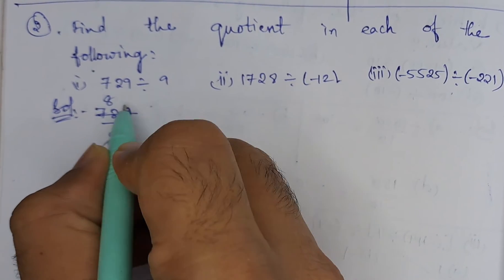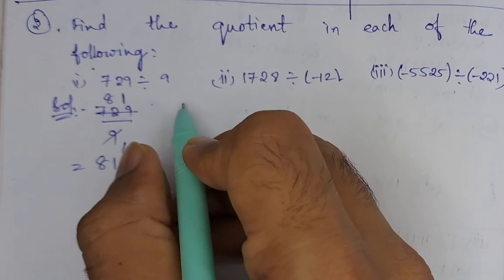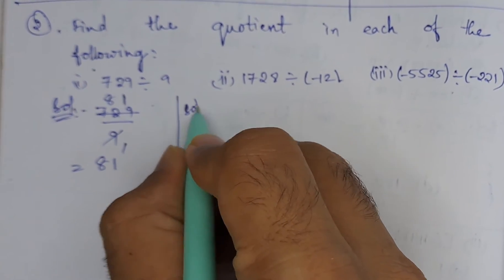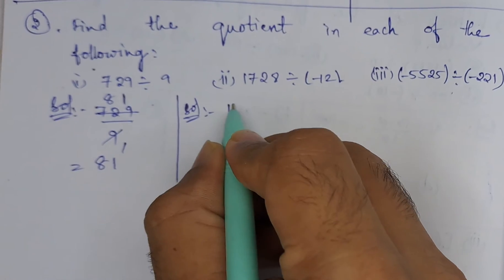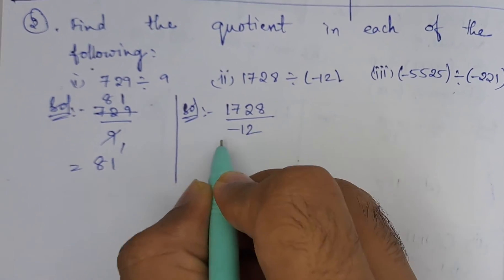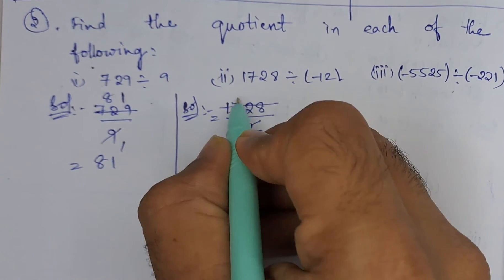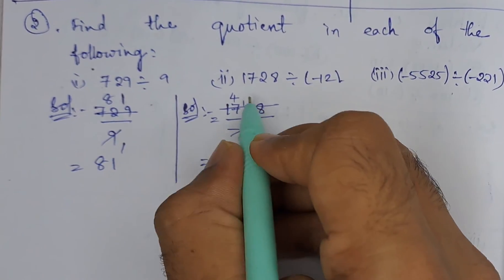Second bit: they have given 1728 divided by minus 12. So here, 4 threes are 12, 4 fours are 16, 1 left. 4 threes are 12, 4 twos are 8.